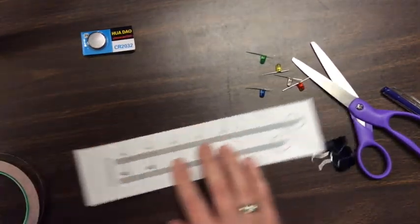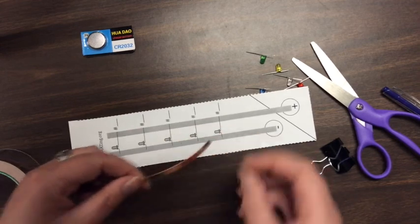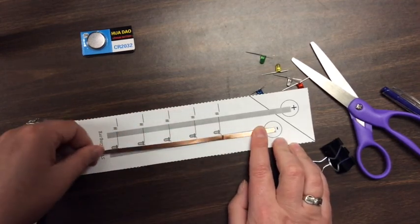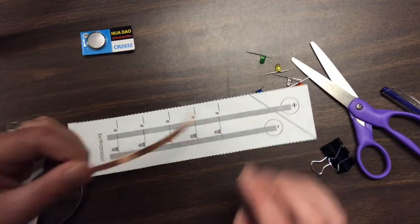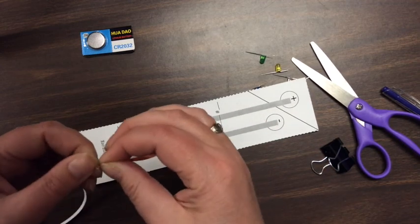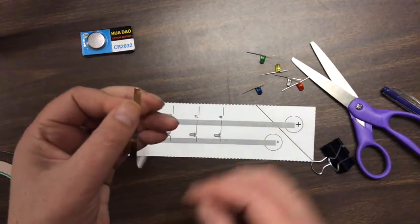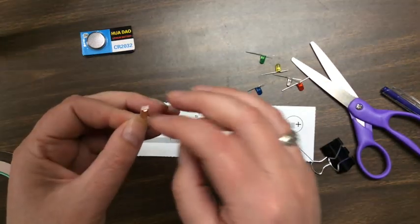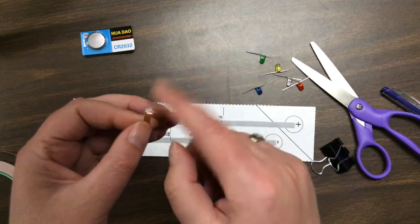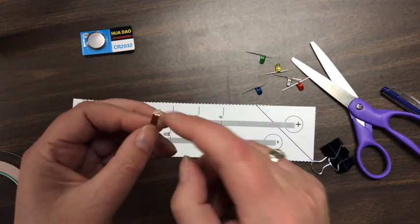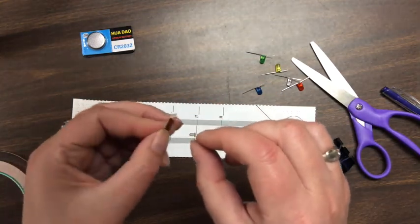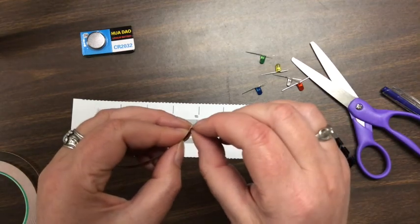So I'm going to take my copper tape and hold it against the gray section with the backing still on, and I can either use my scissors or I can just tear this copper tape. When you look at the copper tape, in order to get it off the backing, it's easiest just to rub your finger along the edge and it'll start to curl up and come off, then you can grab it.